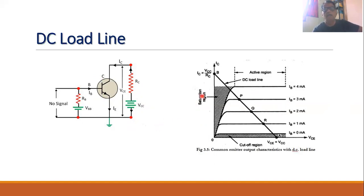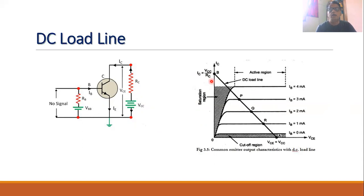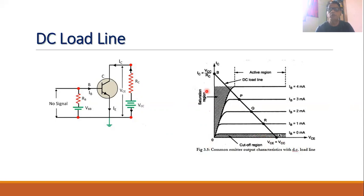The saturation point on the characteristic curve is the maximum value of IC. The maximum value of IC, or IC saturation, can be given by VCC divided by RC. The cutoff point on the characteristic curve is found when IC is equal to zero, that is when VCE is equal to VCC. So for the cutoff point, the collector current is zero. For the saturation point, VCE is equal to zero. This point on the curve is called the cutoff point, and this point is called the saturation point.